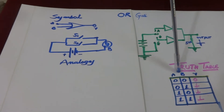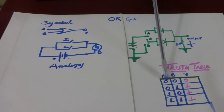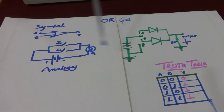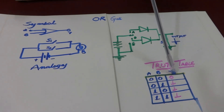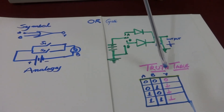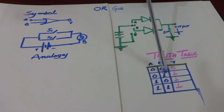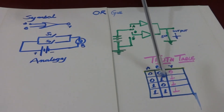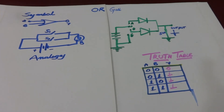The only condition where the bulb will not glow is when both switches are open. In the truth table, zero represents the switch in open condition and one represents closed. When both switches are open, output is zero — no current passes and the bulb does not glow. If any one of the two switches is closed, the bulb glows, so 0,1 gives output 1; 1,0 gives output 1; and 1,1 also gives output 1.